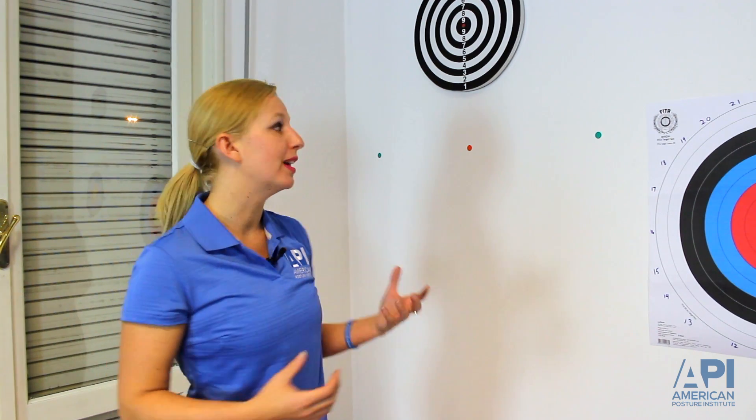With vestibular function, you always want to check the VOR, or the vestibular ocular reflex, with your patient. If you notice that the patient has any sort of saccades or nystagmus or an inability to gaze stabilize on a specific target while moving their head, this can create a detriment to their posture system.